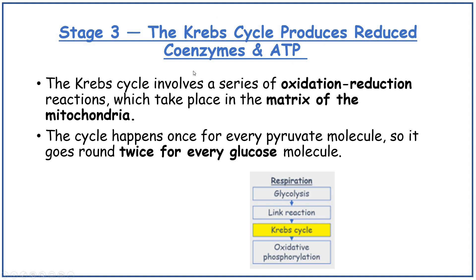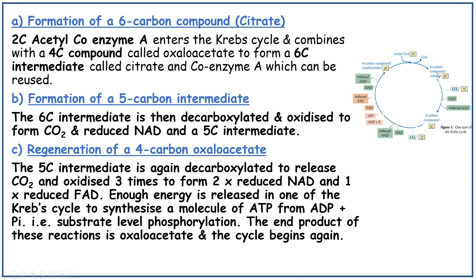Stage three, the Krebs cycle, produces reduced coenzymes and ATP. It involves a series of oxidation-reduction reactions taking place in the matrix of the mitochondria. The cycle happens once for every pyruvate molecule, so it goes around twice for every glucose molecule. First, two-carbon acetyl-CoA enters the Krebs cycle and combines with four-carbon oxaloacetate to form six-carbon citrate. The coenzyme A then goes back to the link reaction to be reused. The six-carbon intermediate is then decarboxylated and oxidised to form carbon dioxide and reduced NAD, giving a five-carbon compound.